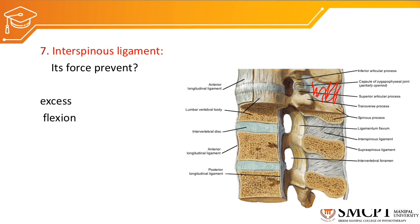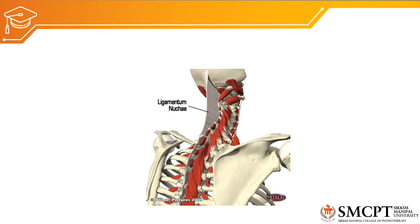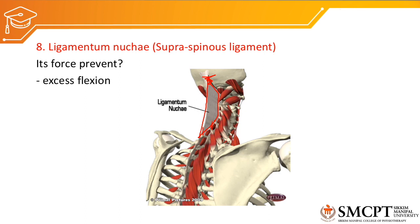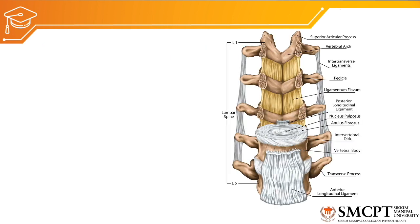The next important ligament is the ligamentum nuchae, which is very prominent in the cervical vertebra. Ligamentum nuchae is also called the supraspinous ligament — it travels through the tip of the spinous process and attaches to the nuchal line and the occipital protuberance. It generates force which prevents excessive flexion.